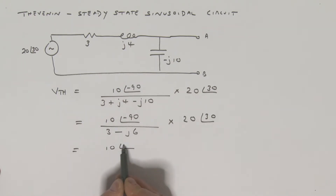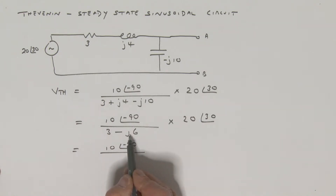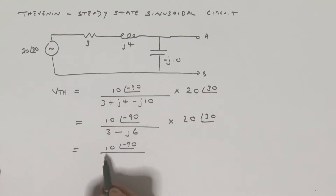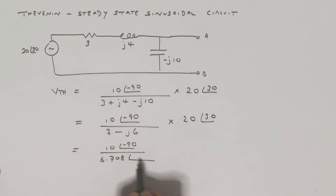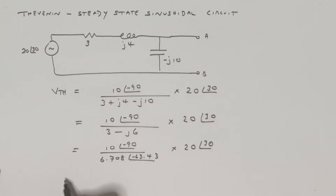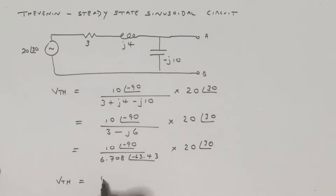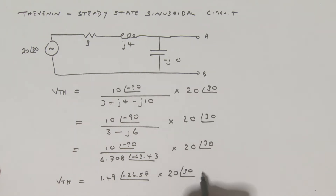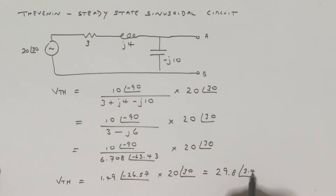What we need to do is convert this into a polar representation. That's 10 at angle minus 90. This in polar form — I would like you to go ahead and check me — I'm saying that is 6.708, with a bit of rounding, and my angle is minus 63.43. And that's multiplied by 20 at angle 30. Finally, the Thevenin voltage is equal to: taking this term and dividing by this gives me 1.49, with an angle of minus 26.57, multiplied by the source at an angle of 30. Working that out, I get my Thevenin voltage to be 29.8 at an angle of 3.43 degrees.